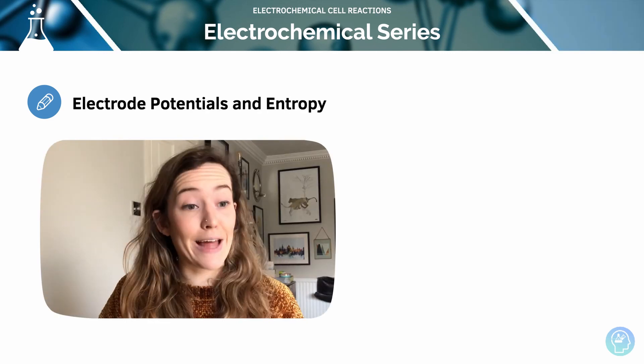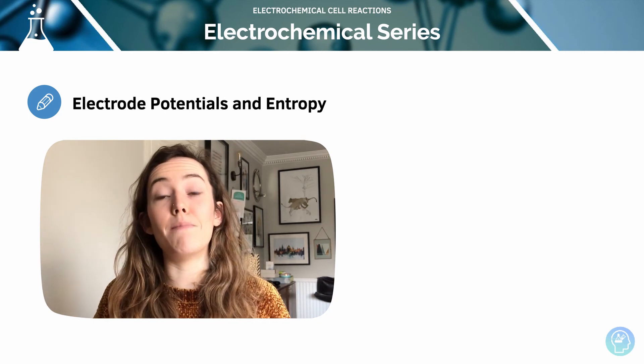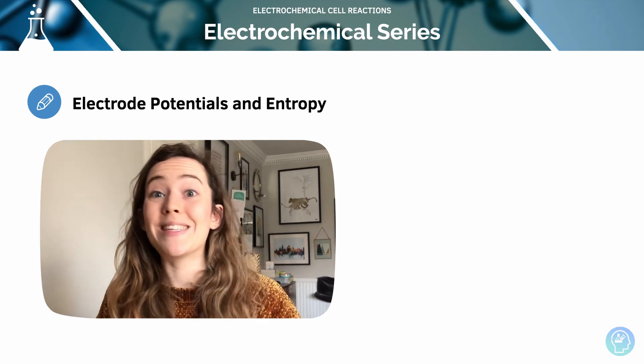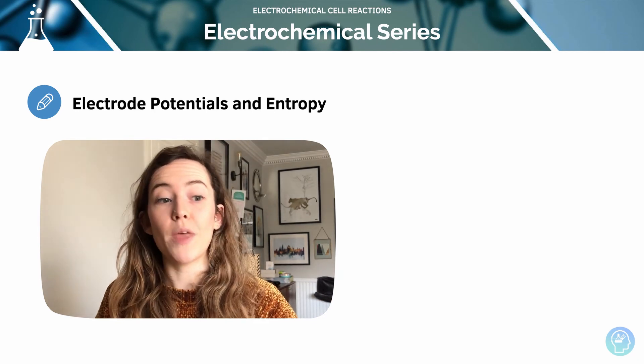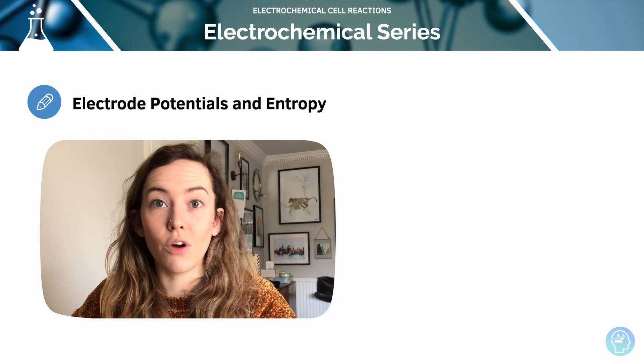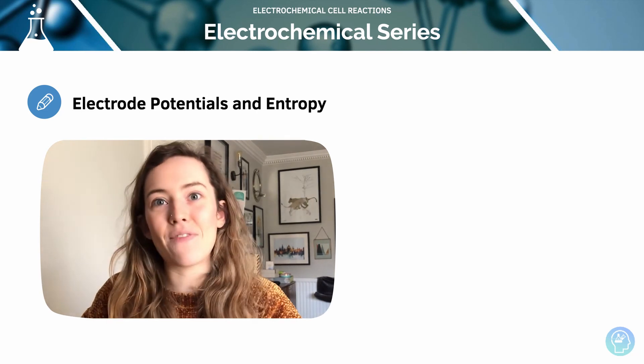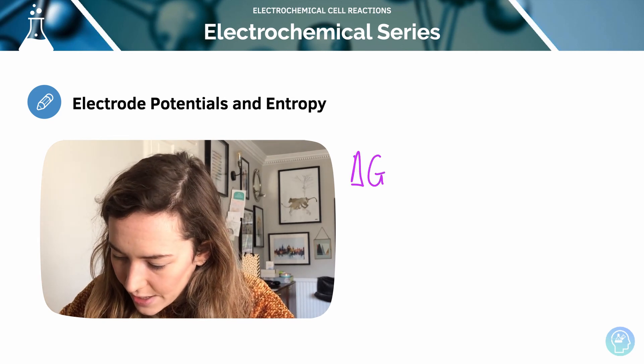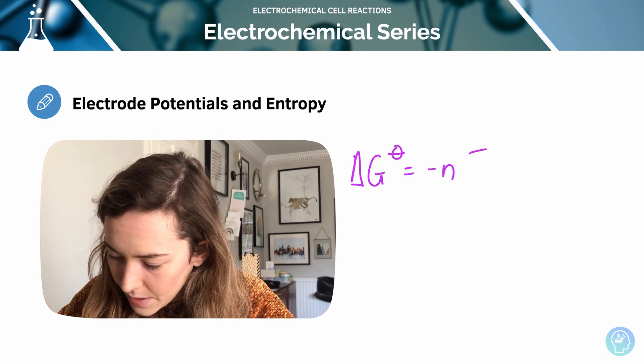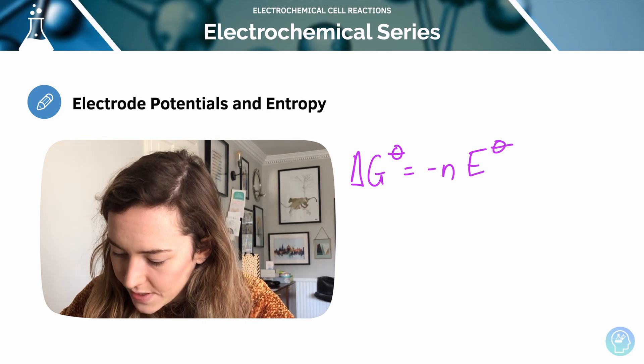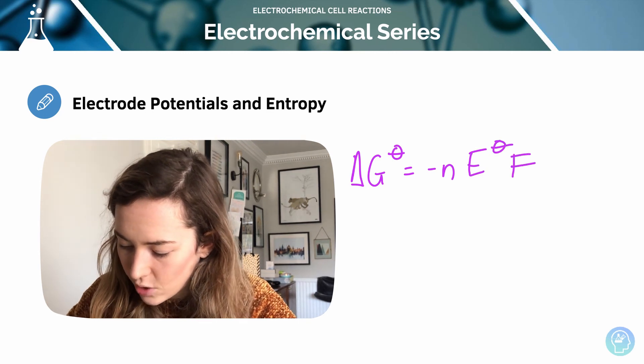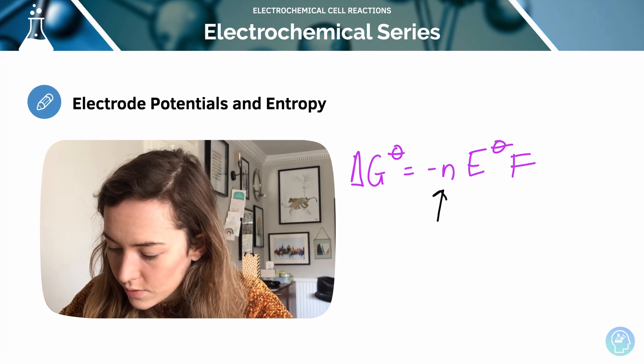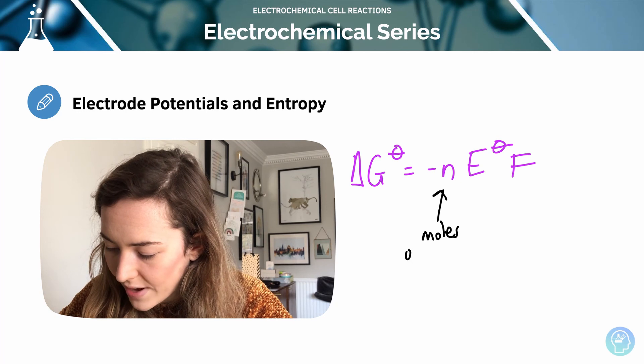How do we link electrode potentials and entropy? Because I mentioned that Gibbs free energy is a factor here. So standard electrode potentials, they're directly proportional to the total entropy change of a reaction. So EMF is linked to Gibbs energy by this equation. So there's my Gibbs energy. ΔG = -nE°F. So n, as always, is moles. It's number of moles of electrons transferred. And F is my Faraday constant.